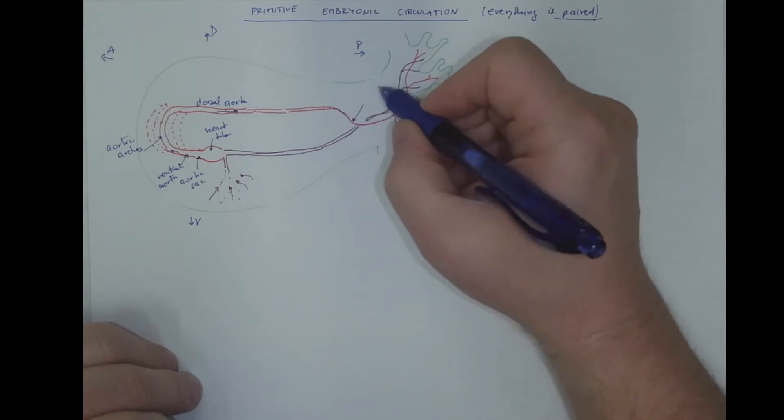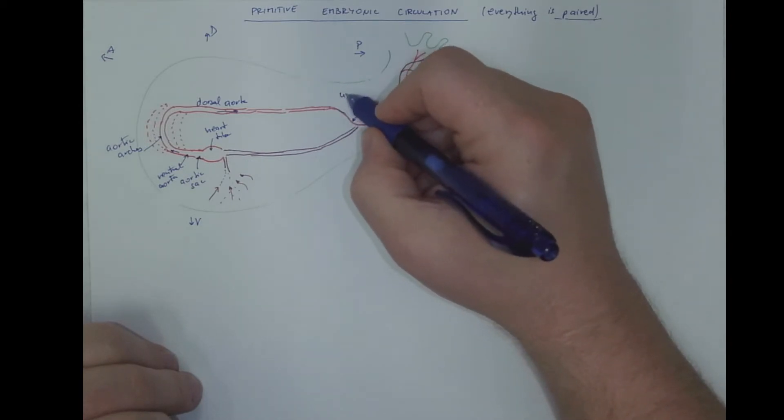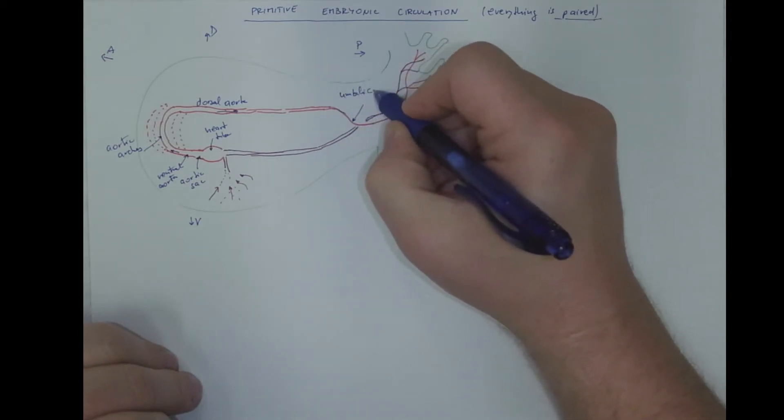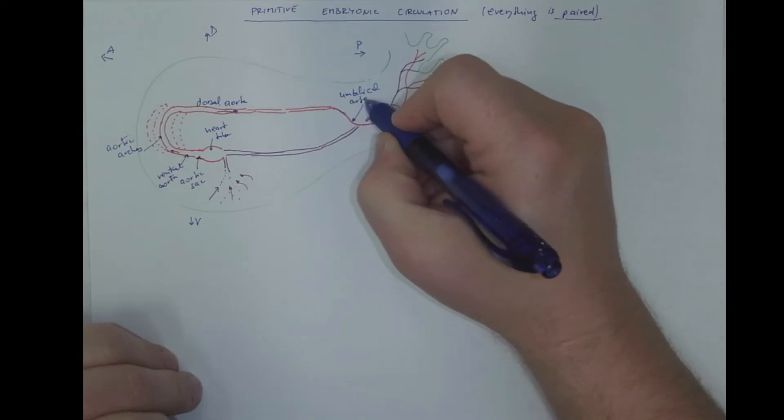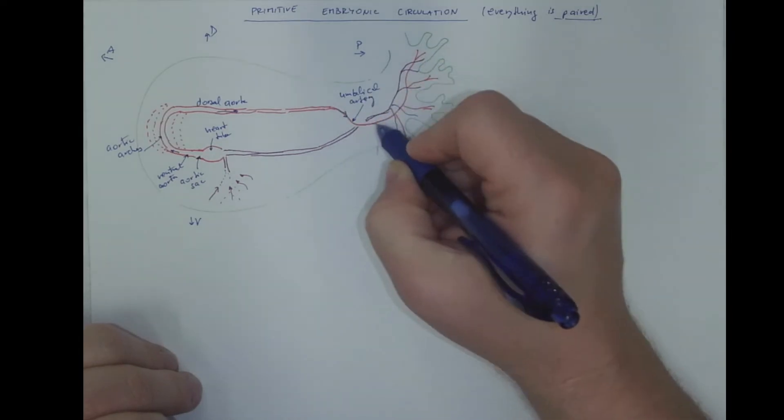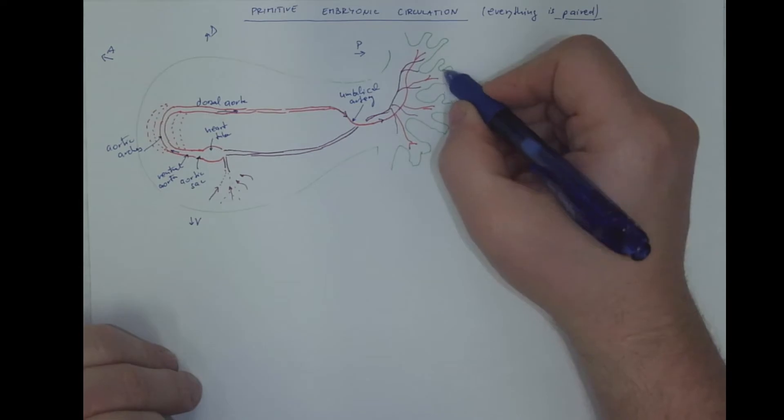Then we got the umbilical artery that carries the blood into the chorionic villi.